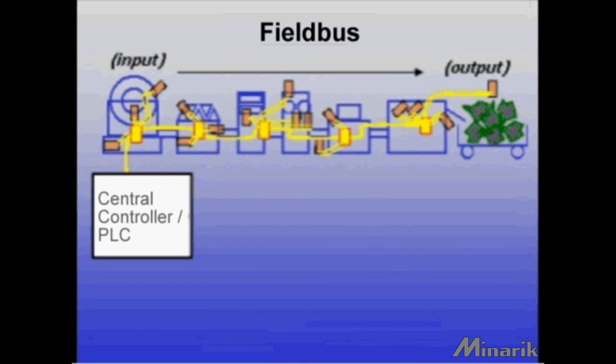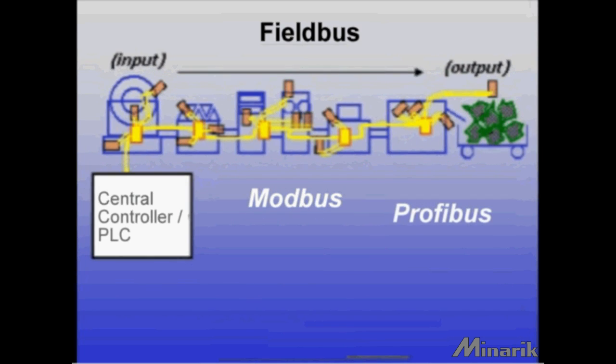Examples include Modbus, developed by Modicon in the late 1970s; Profibus, which came from Germany in the 1980s; and DeviceNet, developed by Allen Bradley for use with their PLCs.